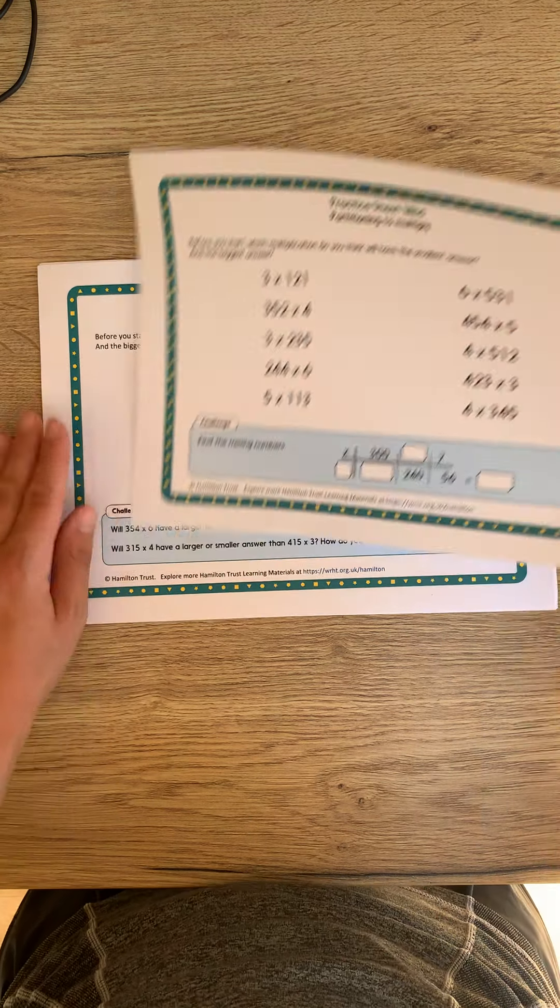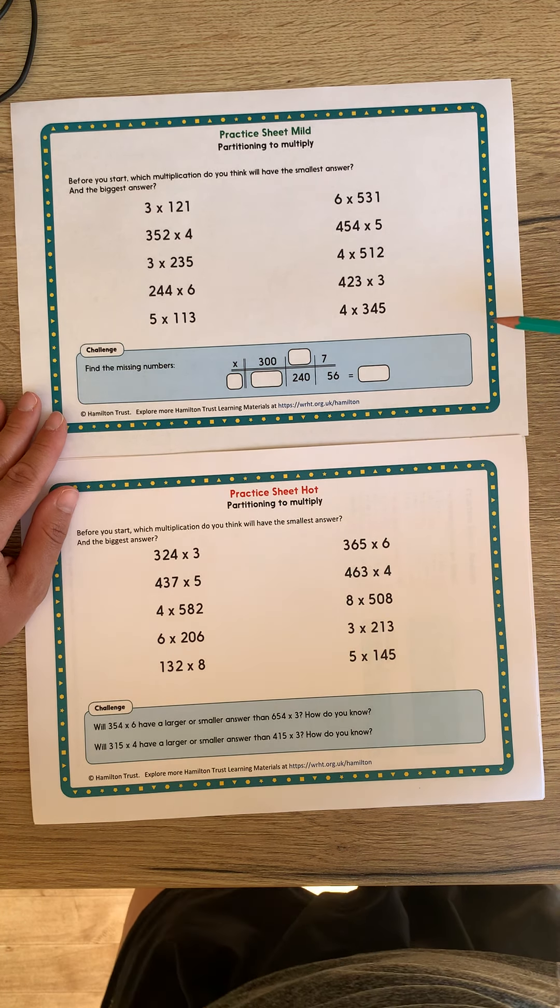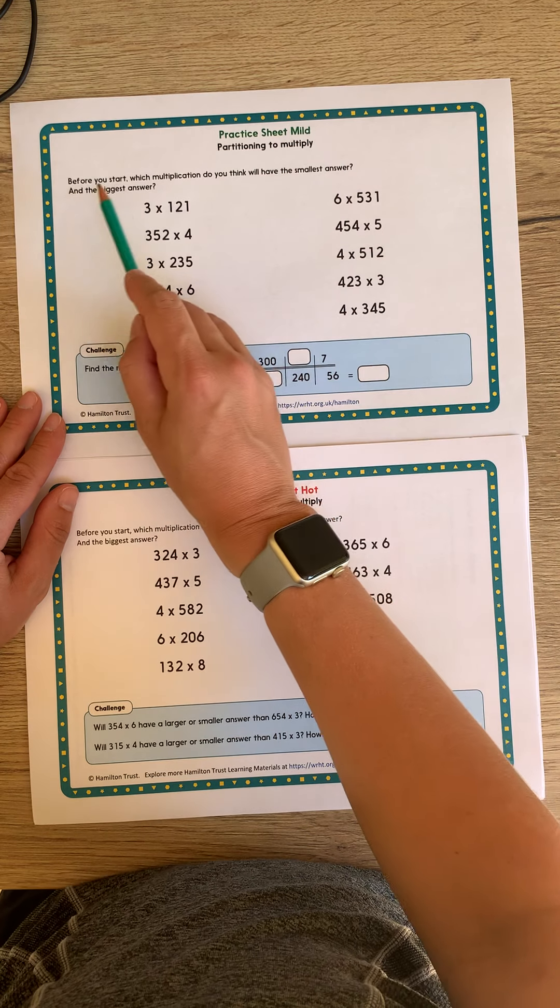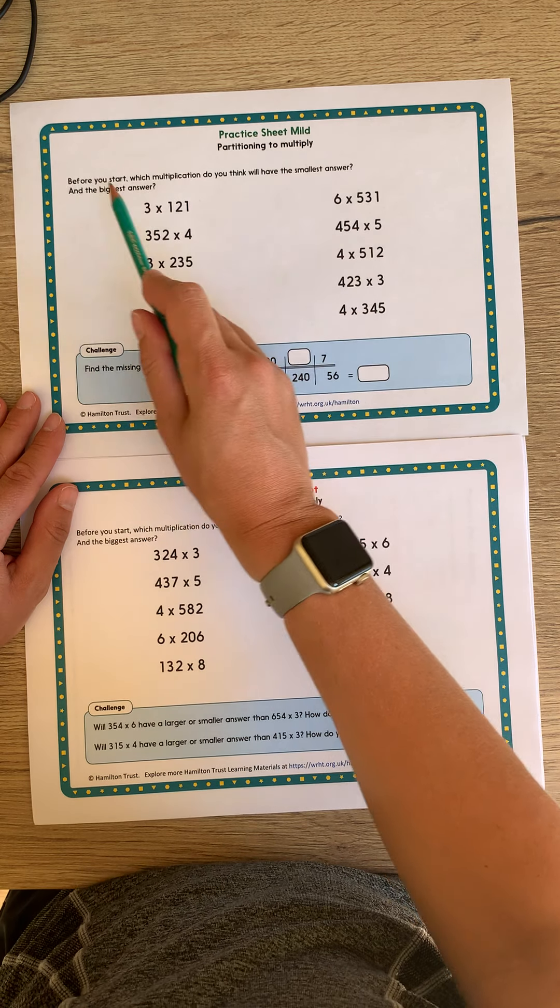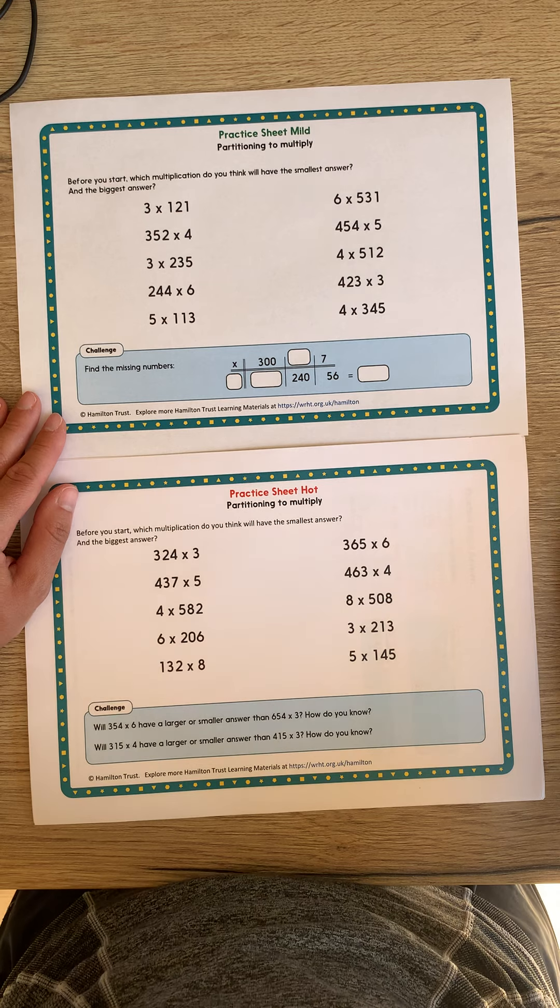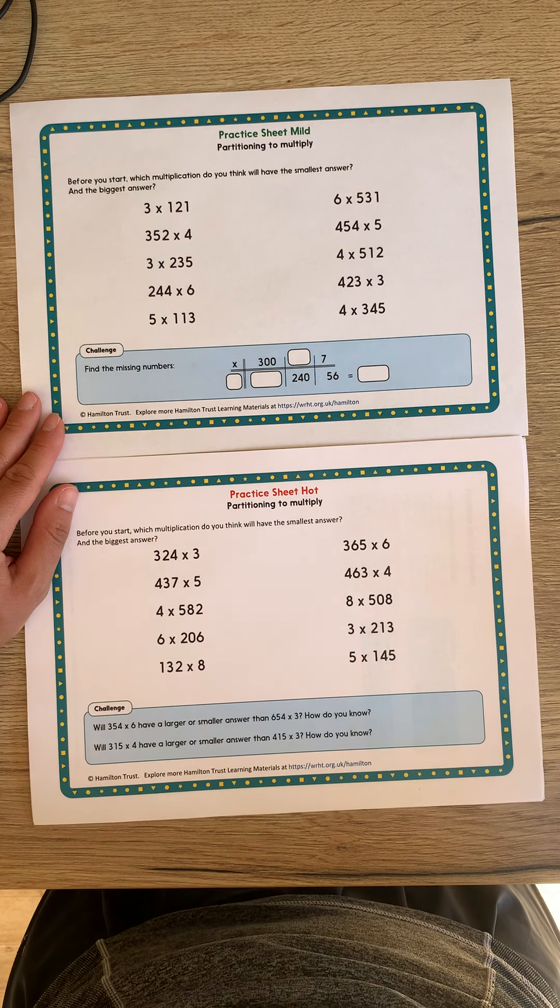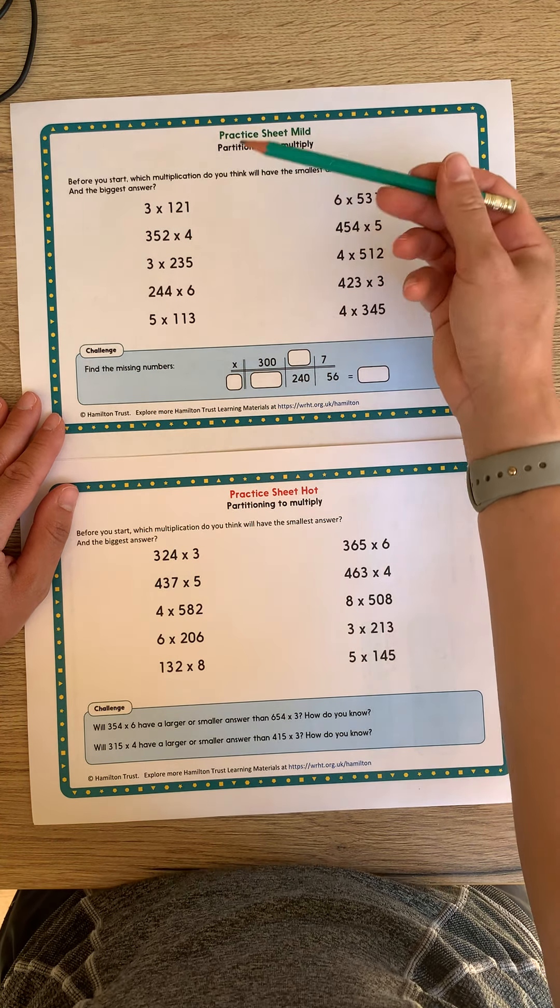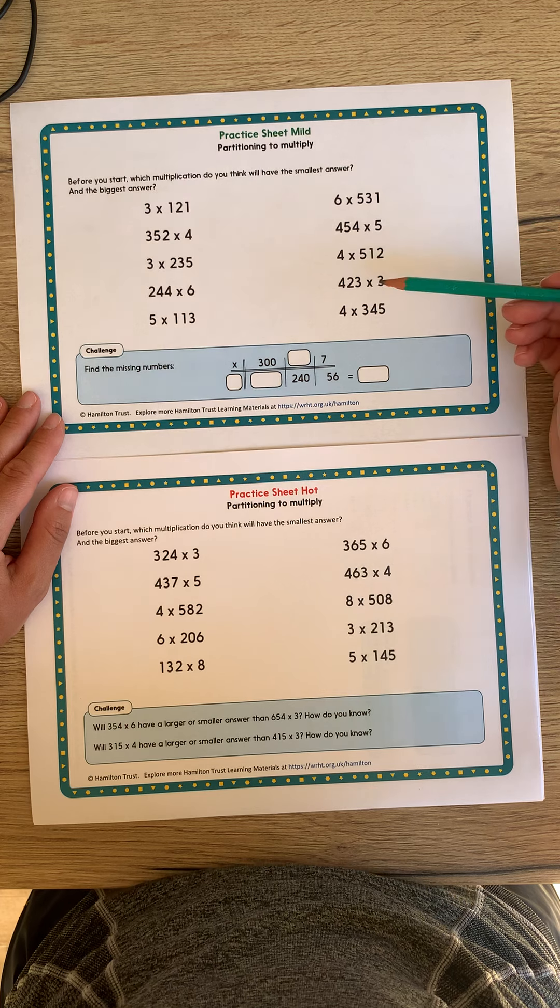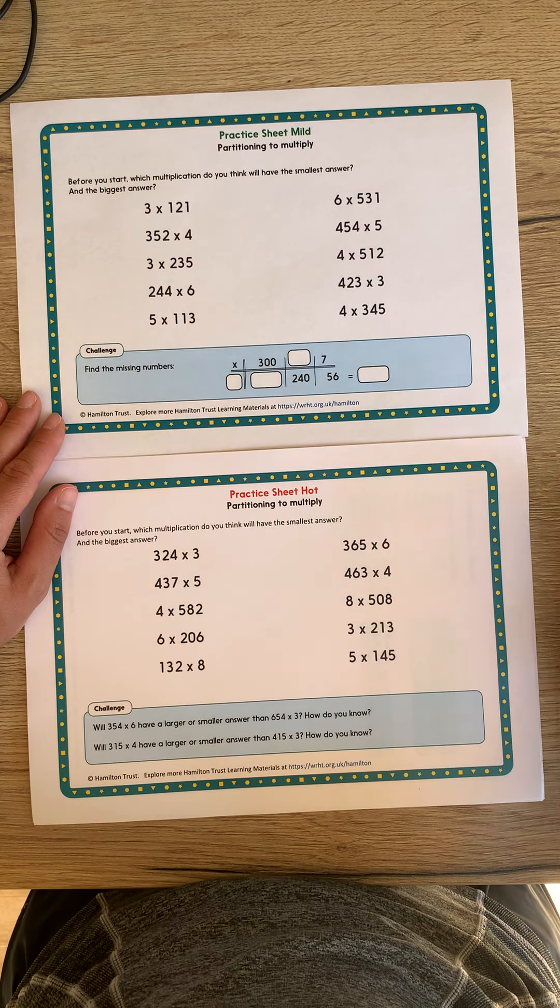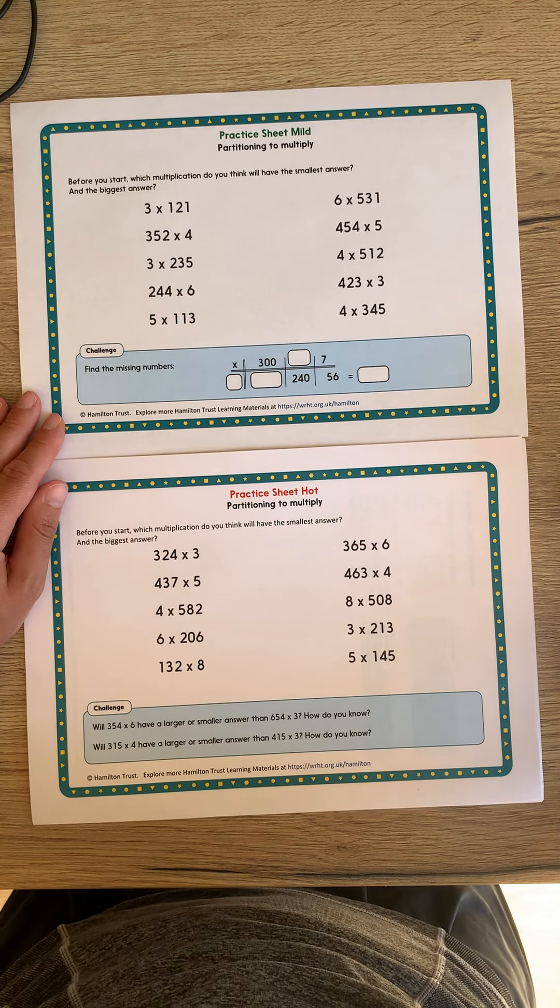But the task today, similar to yesterday, in that we have got lots of number sentences. I think that the easiest option, again, is to do this in your book. However, before you start today, which multiplication do you think will have the smallest answer and which will have the biggest answer? So this is before you do any calculations whatsoever. I would like you to look at the number sentences, and this applies to both the mild and the hot sheets. And I would like you to think about using some estimation tactics like we did at the beginning of the video. Which one is going to have the biggest answer and which is going to have the smallest answer? Then, using the grid method, calculate your answers to each of these. See if you were right. See if your estimate was correct.